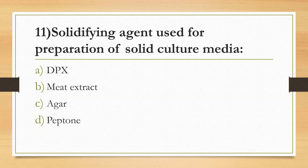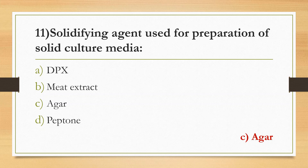Eleventh Question: Solidifying agent used for preparation of solid culture media — Option A: DPX, Option B: Meat extract, Option C: Agar, Option D: Peptone. Answer is Option C: Agar. Agar is used at 1.5% to 2% concentration. Meat extract provides nitrogen, vitamins, amino acids, and carbon. Peptone provides peptides, amino acids, lipids, vitamins, and sugars. DPX is a mounting medium used in histopathology.